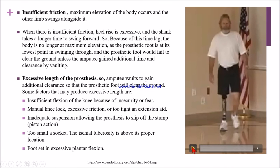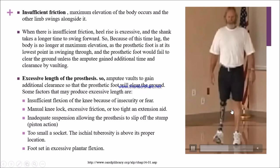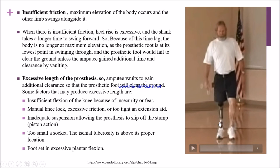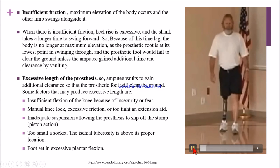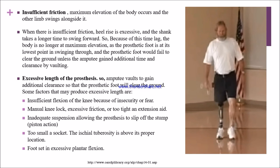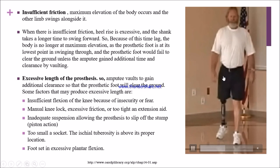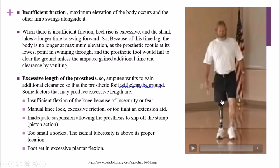Let's see how a patient vaults. In this video, the patient shows vaulting while walking. If the patient has insufficient knee friction, maximum elevation of the body occurs and the other limb swings along the side. When there is insufficient knee friction, heel rise is excessive.